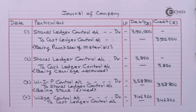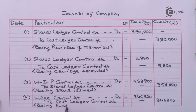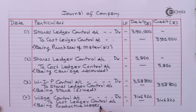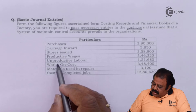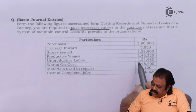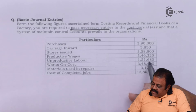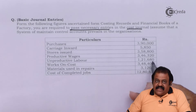Productive wages 3,46,320. The entry is: Work in Progress Control Account debit 3,46,320 to Wages Control Account, being productive wages recorded.